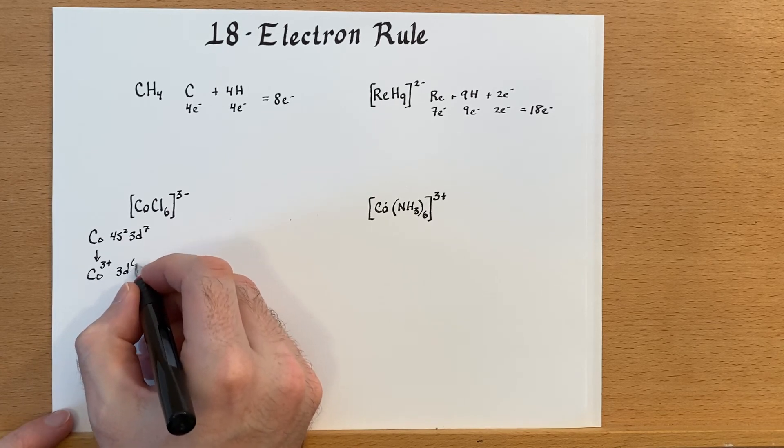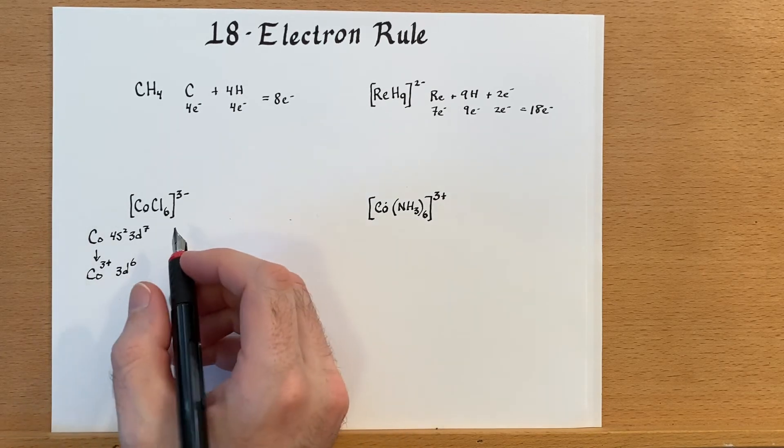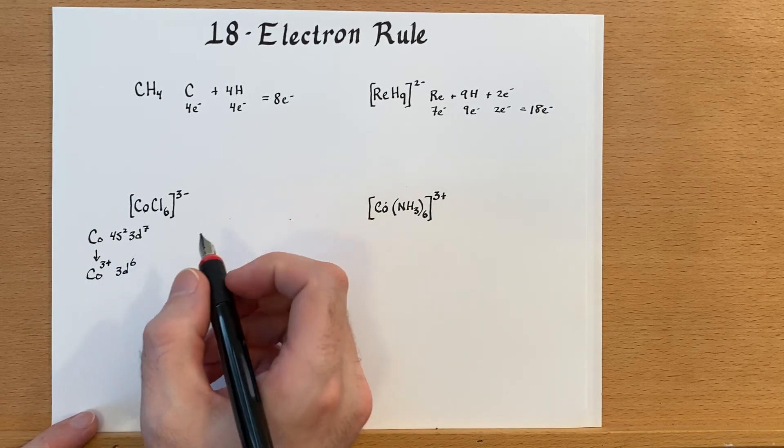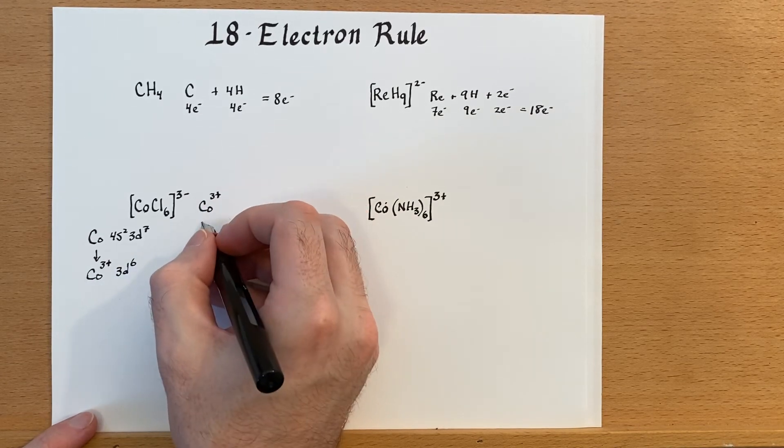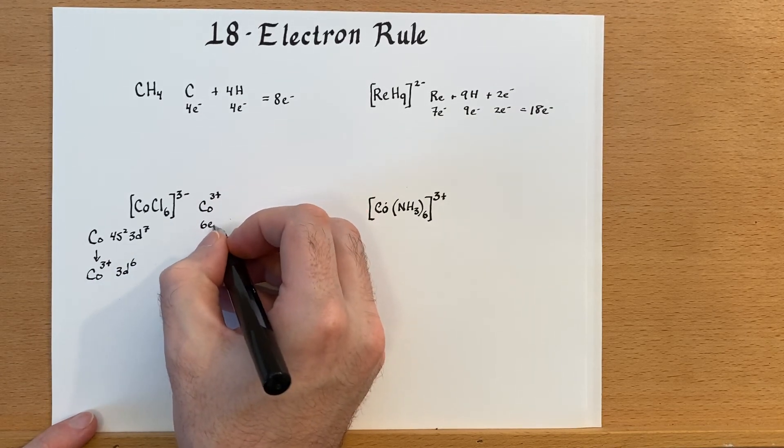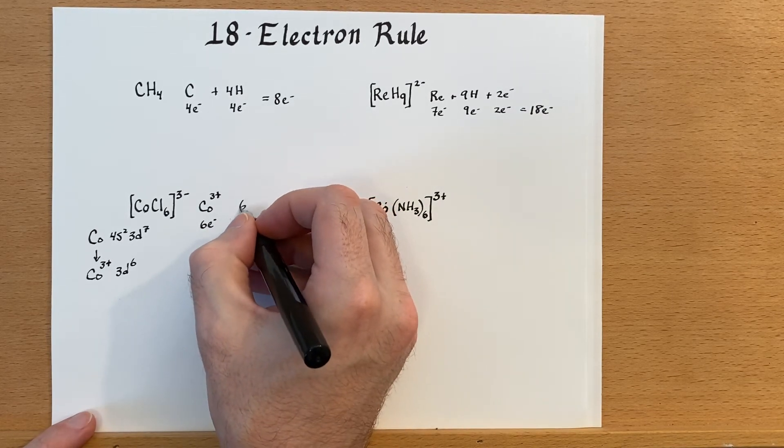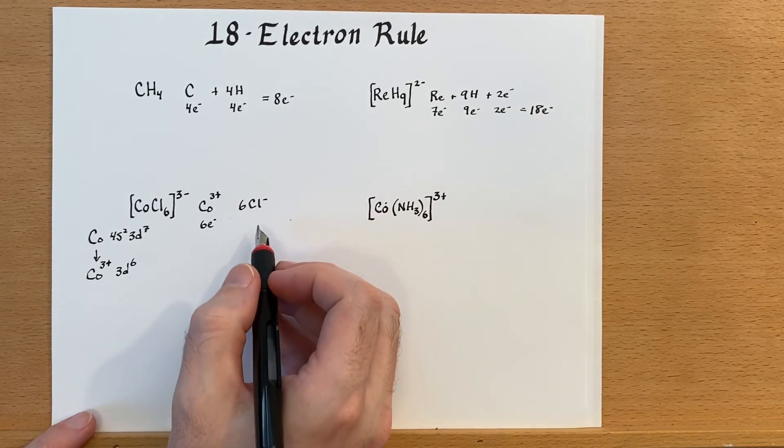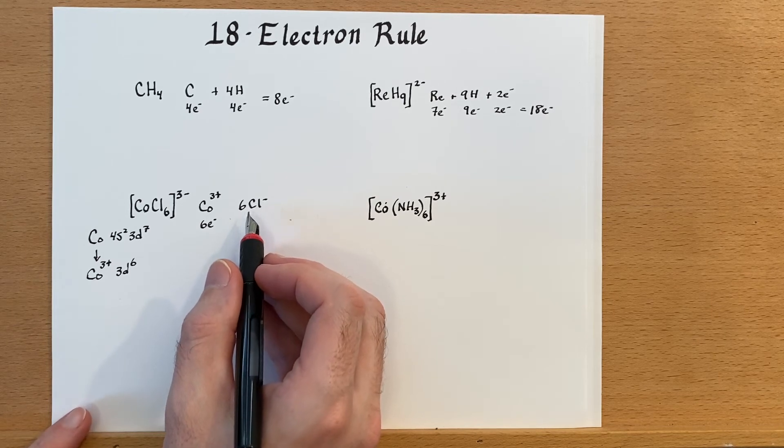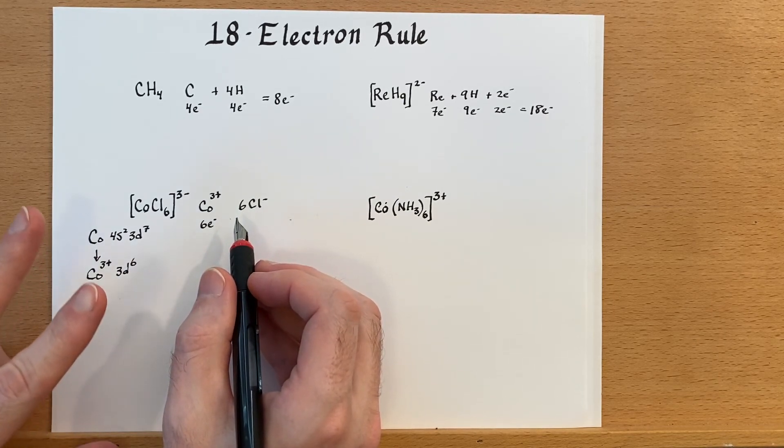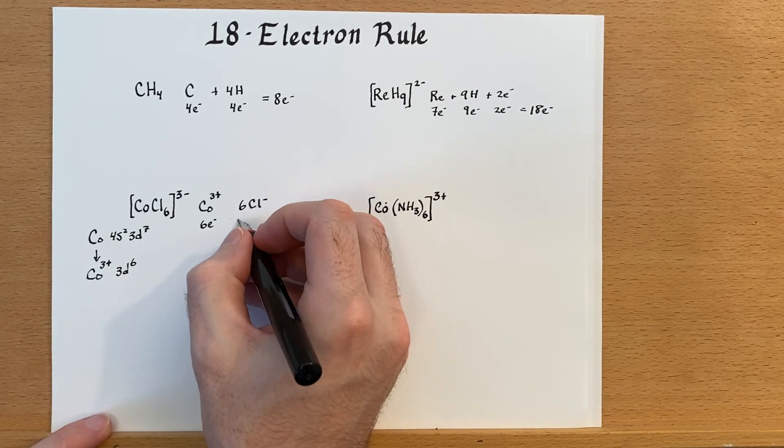into 3d⁶, or since we're just counting electrons, six electrons. That's really what we were after. So cobalt 3 plus, that is six electrons. Now we have six chlorides. Now when the chloride is bonding to the metal, it's using two electrons for every chloride, so this is actually 12 electrons right here.